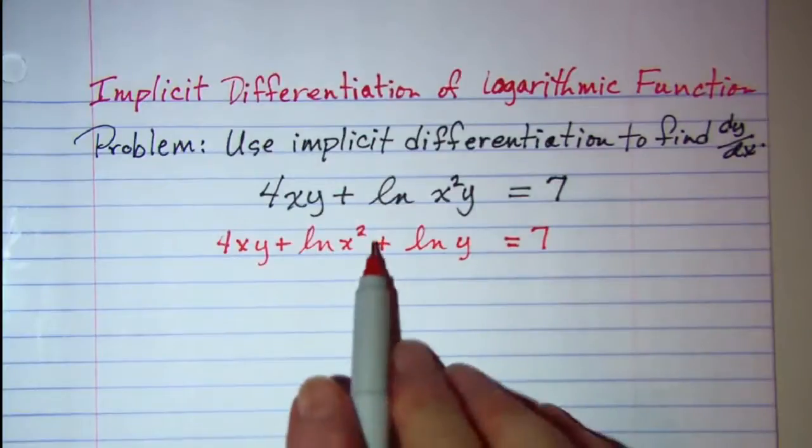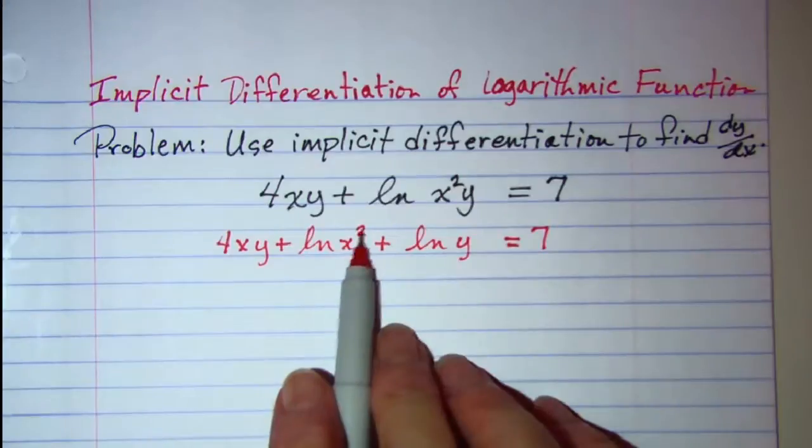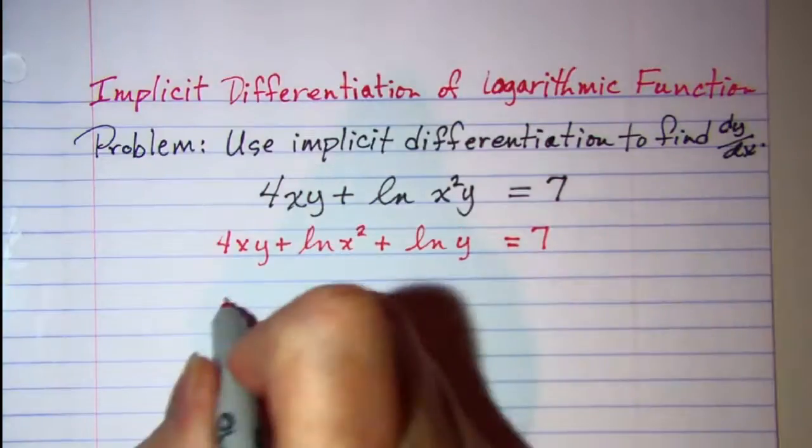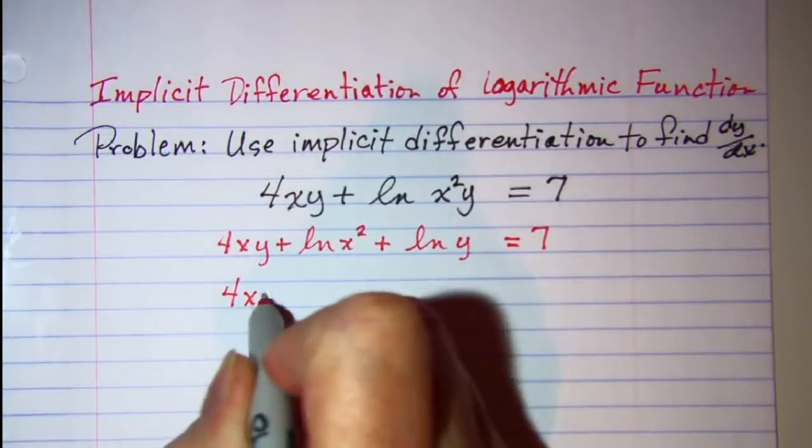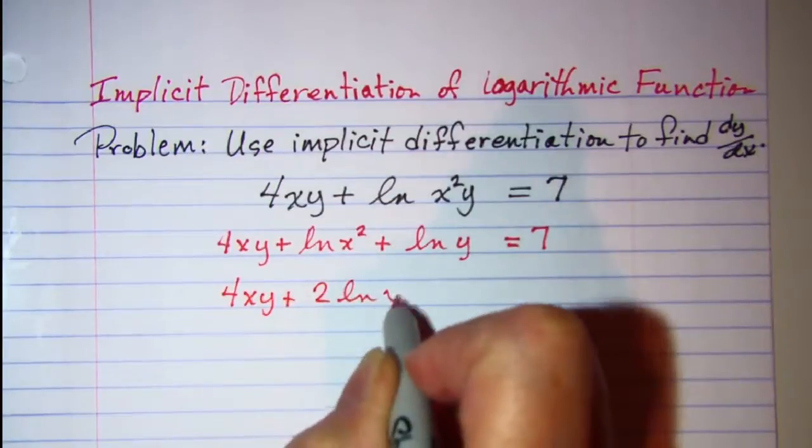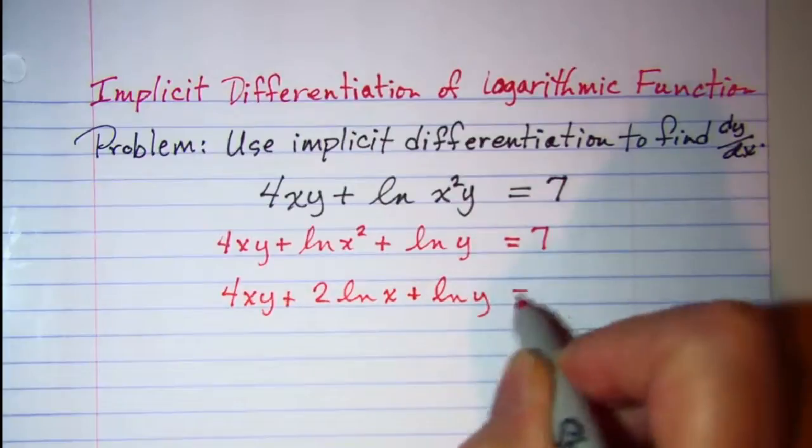Then I'm going to use the property of logarithms that allows me to take this exponent out in front of my logarithm. So I have 4xy plus 2 ln x plus ln y equals 7.